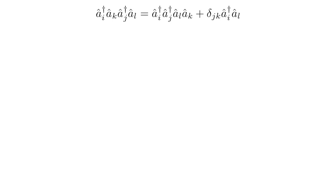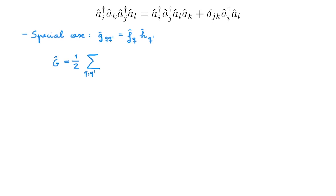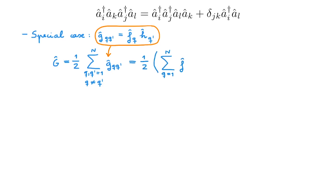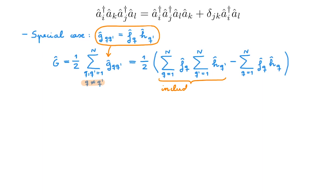Now let's move to the main point: writing a two-body operator in second quantization. We start with a special case where the two-particle operator g_{qq'} can be factorized as the product of two single-particle operators F_q times H_{q'}. The symmetric two-body operator G equals one-half sum over q and q' (q ≠ q') of g_{qq'}. Substituting the factorized form, we rewrite it as one-half multiplying the sum over q of F_q times the sum over q' of H_{q'}, minus the sum over q of F_q H_q. The first term contains all cross-terms including q = q', and the second term removes the q = q' contribution.